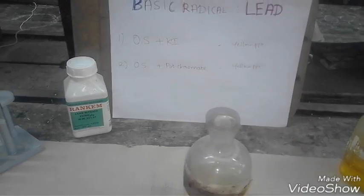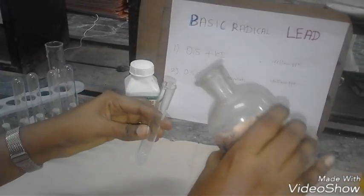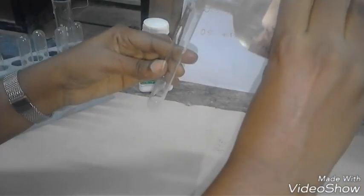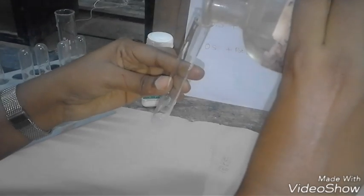First test is adding potassium iodide to a small amount of original solution. I kept it in the test tube. Add potassium iodide solution drop by drop, not more than the original solution.